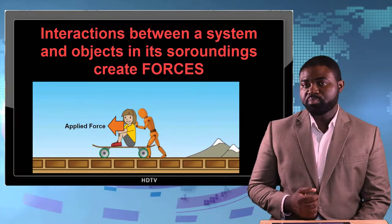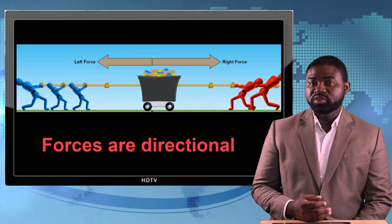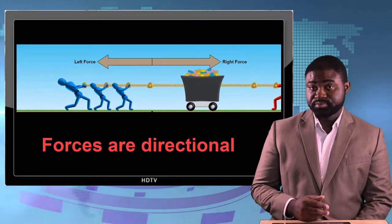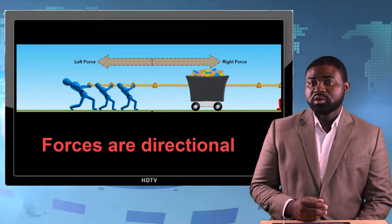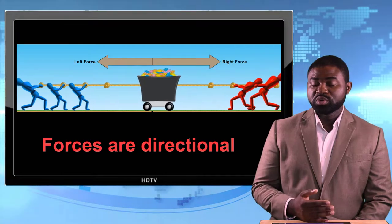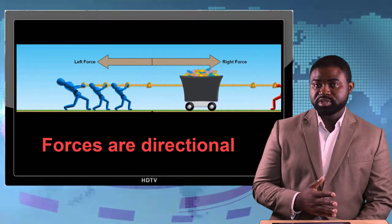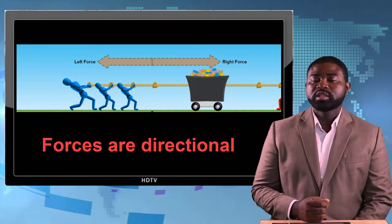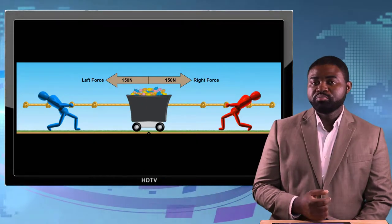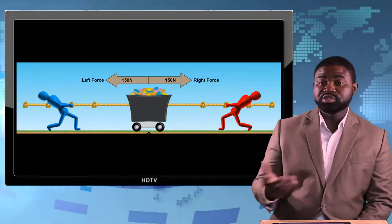It is also important that a system can interact with more than two objects at once, and the direction in which the system will eventually move will depend on who is asserting the bigger force. Take for example a crate being pulled to the right and being pulled to the left by two different people.